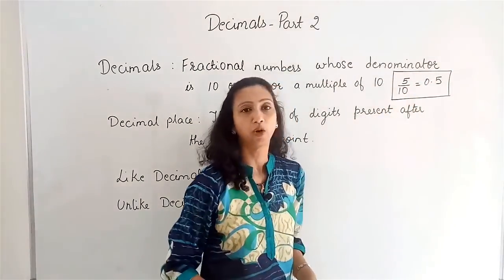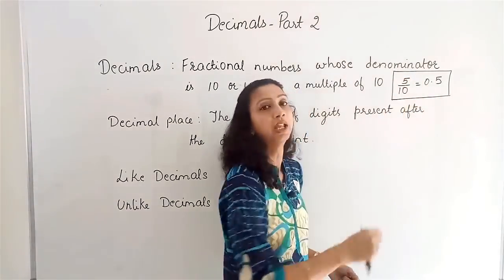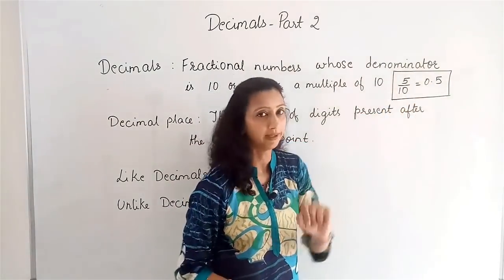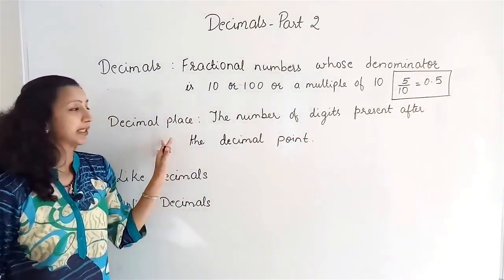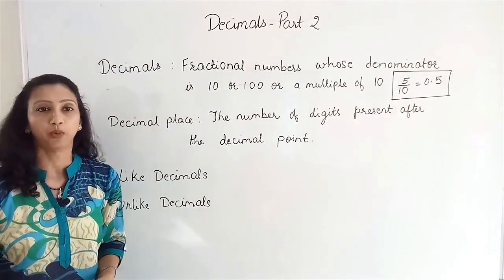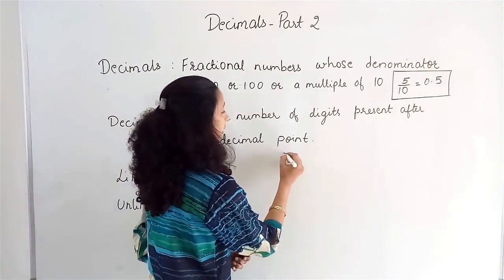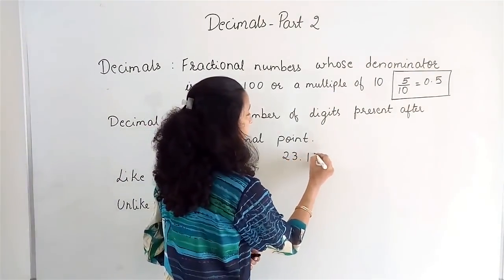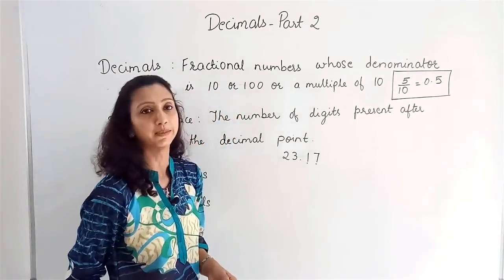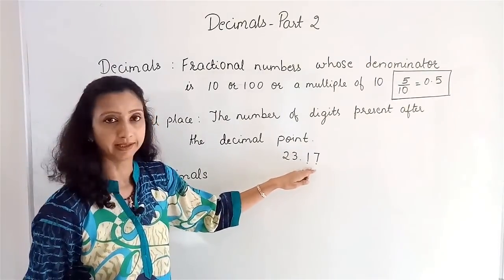There is 1 zero in the denominator, so I start here, move one place left, and put a point to get 0.5. The decimal place is the number of digits present after the decimal point. For example, 23.17 has two digits after the decimal point, so it has two decimal places.